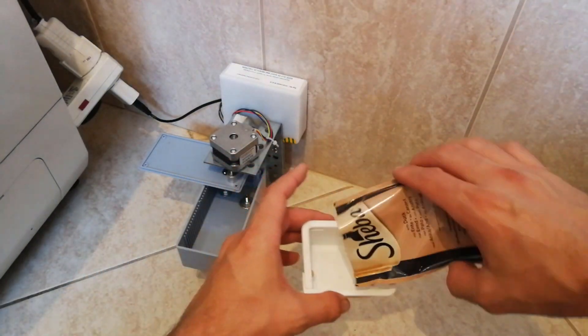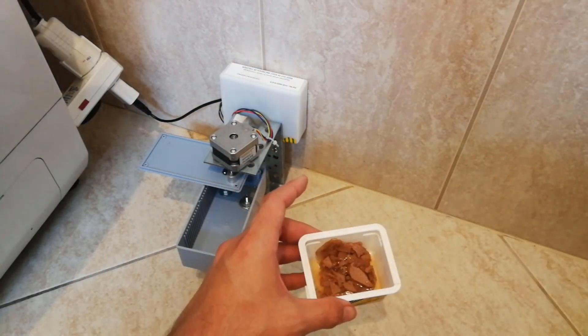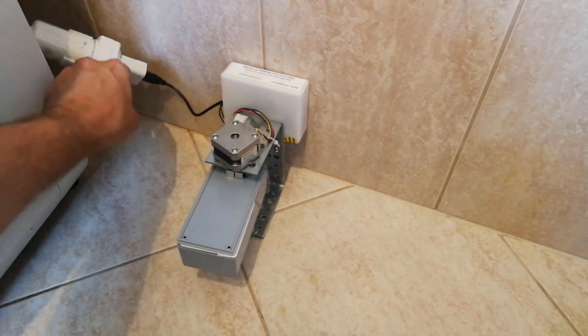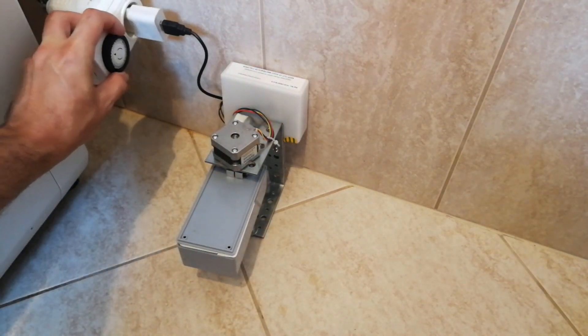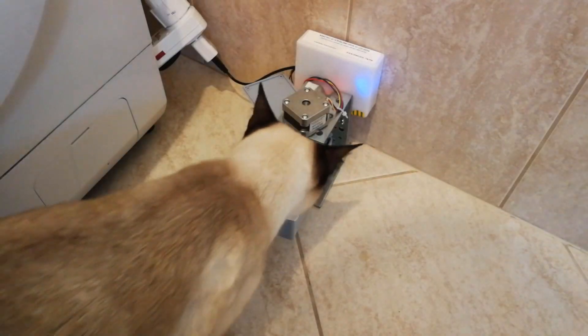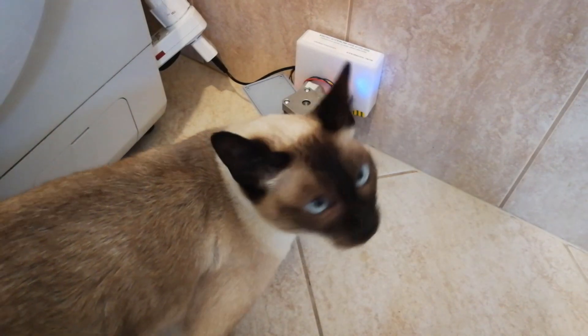Hi everyone, this is a homemade automatic cat feeder. Just take the empty food container, fill it up, place it back, close the door and set the timer. When the timer is up, the door will open automatically and the cat can have a good meal.